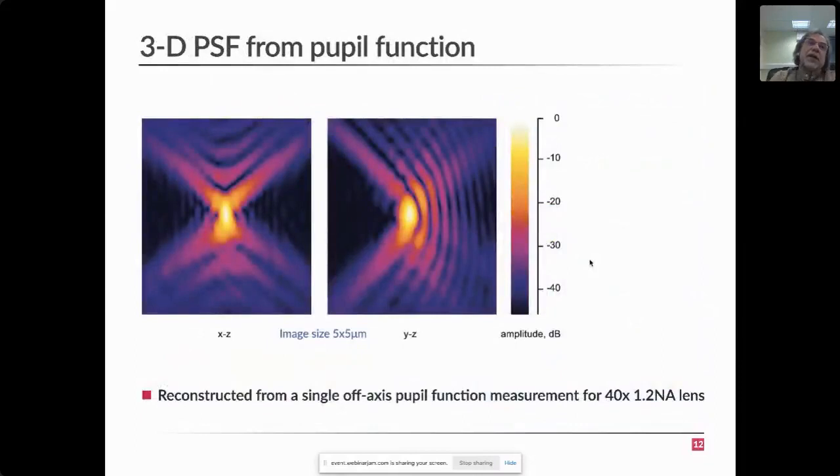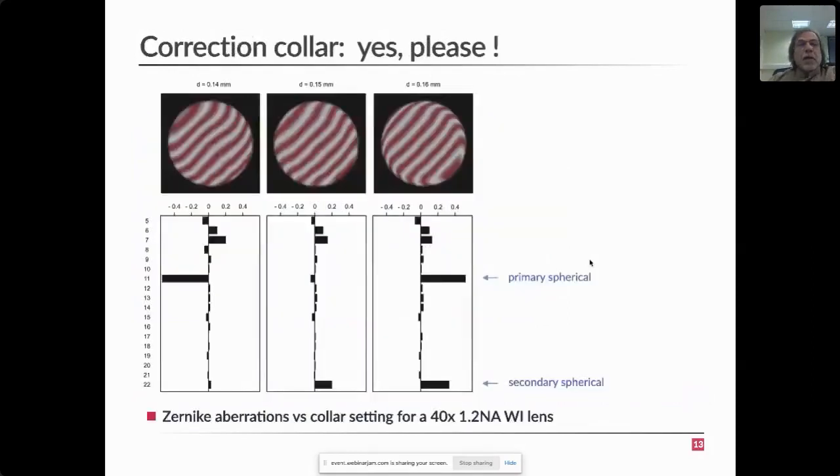Another interesting thing is that when you measure a phase map, this phase map, this pupil function, you can actually recreate your 3D point spread function from a single measurement. You don't have to refocus the system. You can add this defocus computation later on and get those calculations done effectively on the fly.